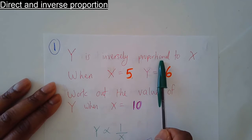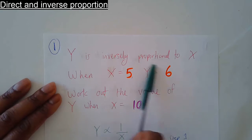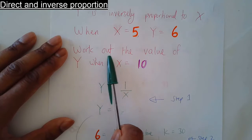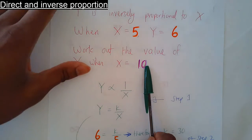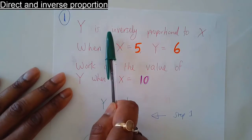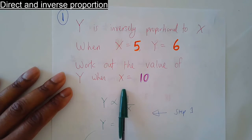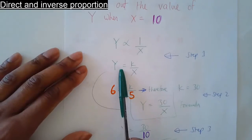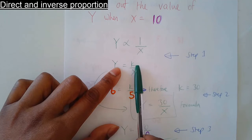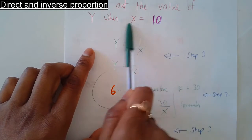y is inversely proportional to x. When x equals 5, y equals 6 — that's the information. Now here's the question: find the value of y when x equals 10. Step 1: y is inversely proportional to x, so convert that to an equation with an equal symbol, but when you do that you need to introduce k — it's called the constant of proportionality, which we're going to work out in a moment.